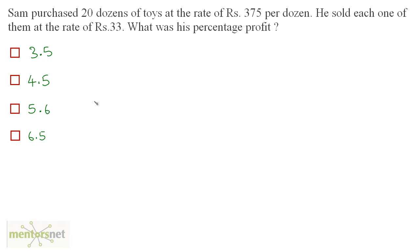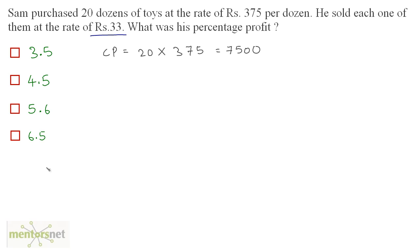Sam purchased 20 dozens of toys at the rate of Rs 375 per dozen and sold each one at Rs 33. The cost price equals 20 times 375, which is 7500. He sells each toy at Rs 33, and there are 20 dozen toys with 12 toys per dozen, so the total number of toys is 20 times 12. The selling price is 33 times 20 times 12, which equals 7920.